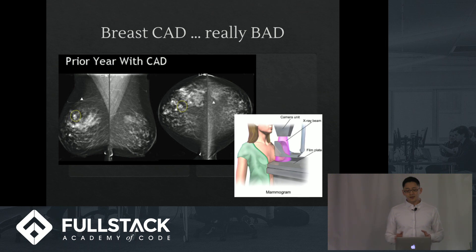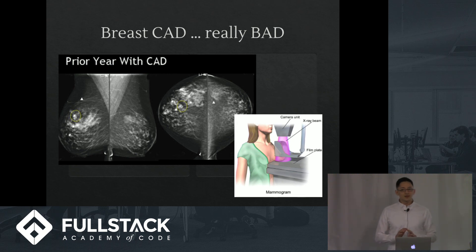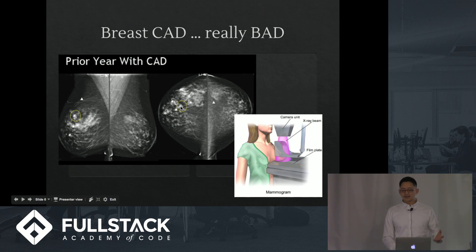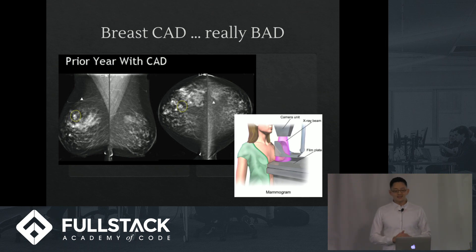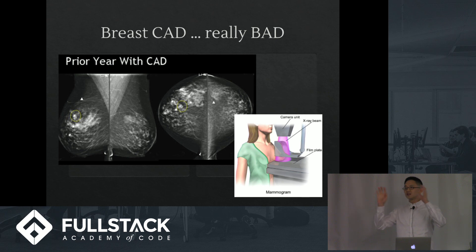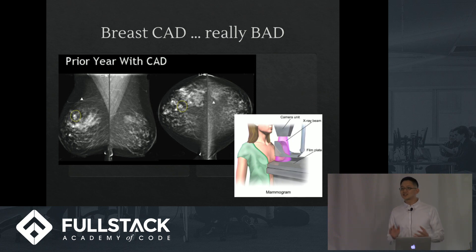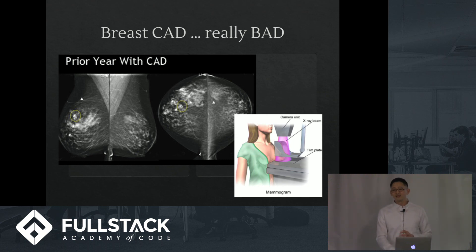It turns out breast CAD is really bad. The performance of these algorithms is horrible. You might see hundreds of patients before any one of these little white triangles the algorithm identified actually turns out to be cancer. What's really bad is because it's so bad, physicians end up just ignoring all the little white triangles — they ignore the algorithm. And then the one out of 600 times it actually identifies something useful, you ignore it and miss the cancer. So breast CAD: really bad.